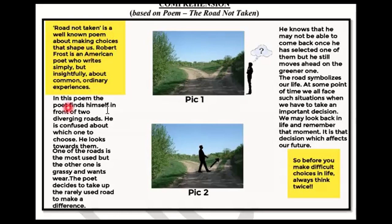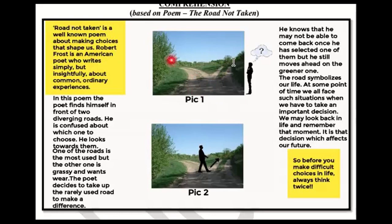In this poem, the poet finds himself in front of two diverging roads. He is confused about which one to choose. There are two diverging roads — one is heavily used and one was a little beaten up. One road is going in one direction and one in another.